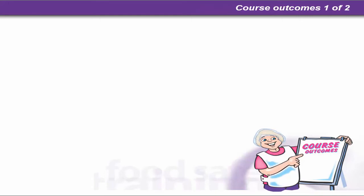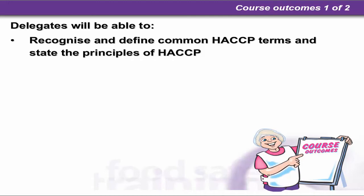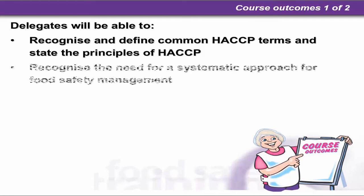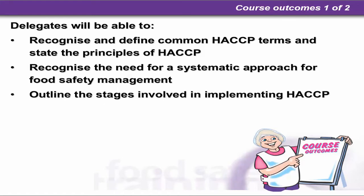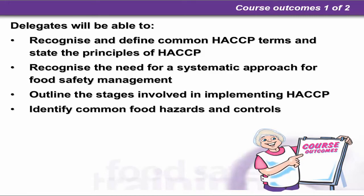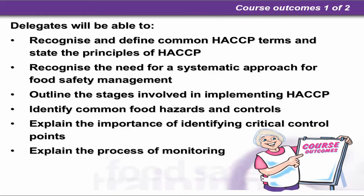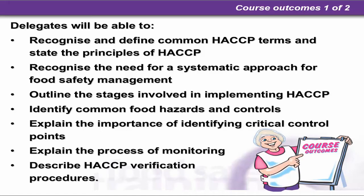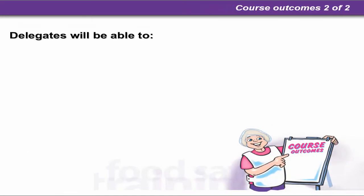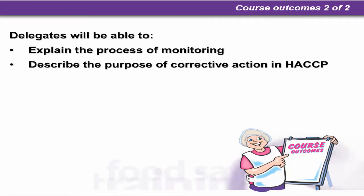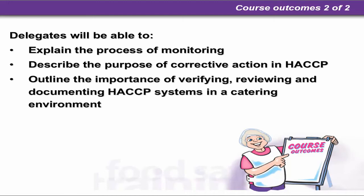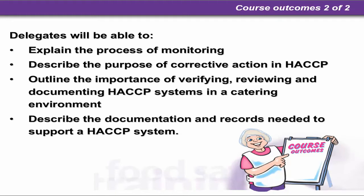The course outcomes: at the end of the course, delegates will be able to recognize and define common HACCP terms, understand the principles of HACCP, recognize the need for a systematic approach to food safety management, outline the stages involved in implementing HACCP, identify common food hazards and controls, explain the importance of identifying critical control points, explain the process of monitoring, and describe HACCP verification procedures. Delegates will also be able to describe the purpose of corrective action in HACCP, outline the importance of verifying, reviewing and documenting HACCP systems in a catering environment, and describe the documentation and records needed to support a HACCP system.